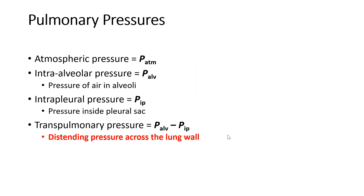Let's describe our pulmonary pressures. The atmospheric pressure (P-ATM) is the pressure in the atmosphere around us. The intra-alveolar pressure (P-ALV) is the pressure of air inside our alveoli — these are the two aspects of our pressure gradient. We've also got the intrapleural pressure, inside the pleural sac, that double-walled membrane lining our lungs. And then the transpulmonary pressure, which is the difference between alveolar and intrapleural pressure.